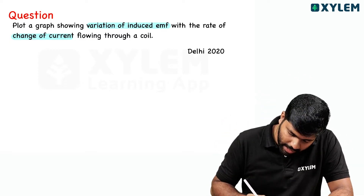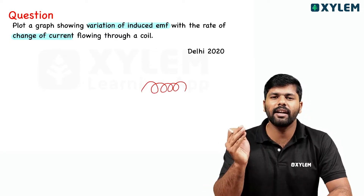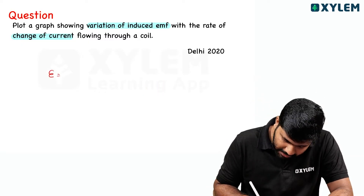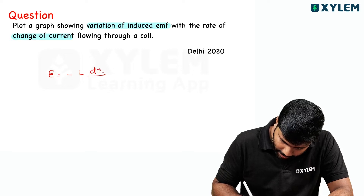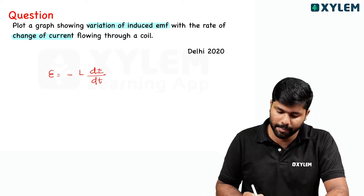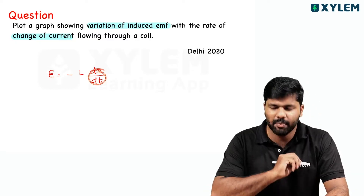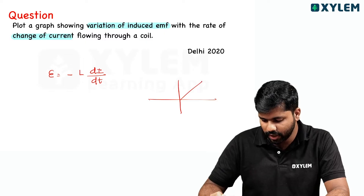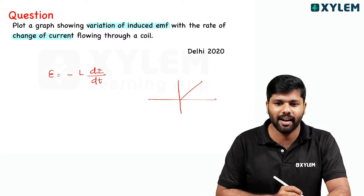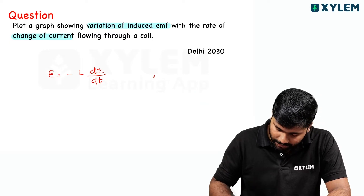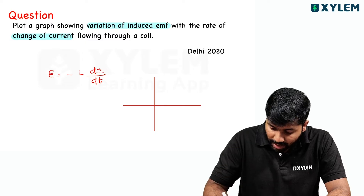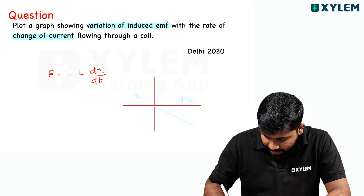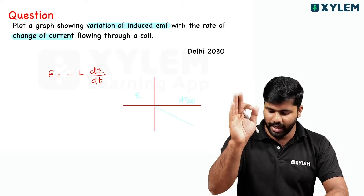This is a single coil — that is called self-induction. The induced EMF equation is E = L di/dt. Since EMF is directly proportional to di/dt, the graph is a straight line through the origin. There is a minus sign, so the graph has a negative slope shape. This is the di/dt on the x-axis. So the second question is complete — this is from the 2020 exam.